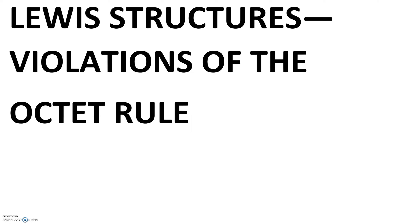Today we're going to be looking at what we'll call violations of the octet rule. The octet rule means that every atom involved in a Lewis structure is striving to have eight electrons in the outermost energy level. But just like any rule, there are always exceptions, and today we're going to be looking at a couple of those.